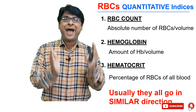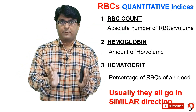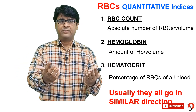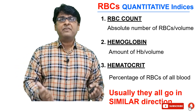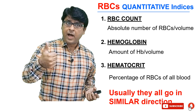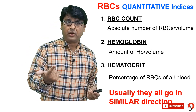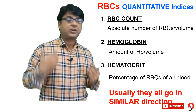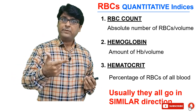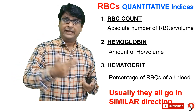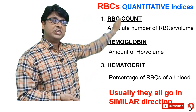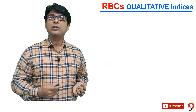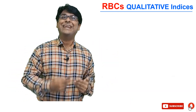So as I always say, try to systematically approach the report. For CBC, divide it like we did for the liver — where we divided it into damage markers and cholestatic markers. Here, we are dividing it into markers associated with red blood cells, white blood cells, and platelets. For red blood cells, these three are the quantitative values. We also have a bunch of qualitative values.